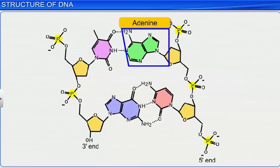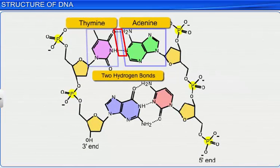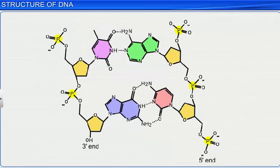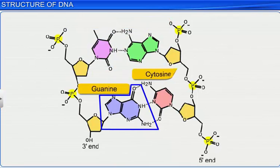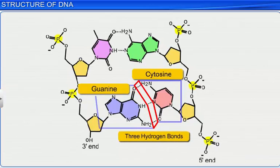Adenine is bonded with thymine from the opposite strand with 2 hydrogen bonds, and vice versa. Similarly, guanine is bonded with cytosine with 3 hydrogen bonds.